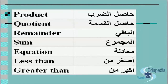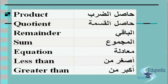Less than: أصغر من. Greater than: أكبر من. So to review — Product: حاصل الضرب, Quotient: حاصل القسمة, Remainder: الباقي, Sum: المجموع, Equation: معادلة, Less than: أصغر من, Greater than: أكبر من.